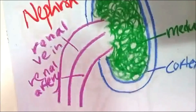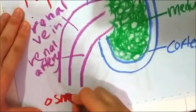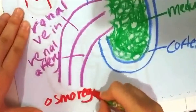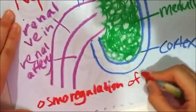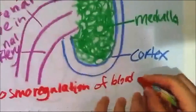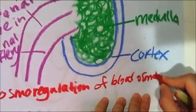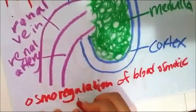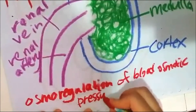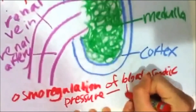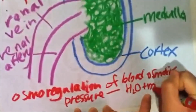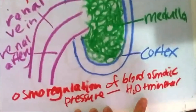So what does kidney do? Kidney does osmoregulation of the blood osmotic pressure. It means that it will control the concentration of water and minerals in the blood.